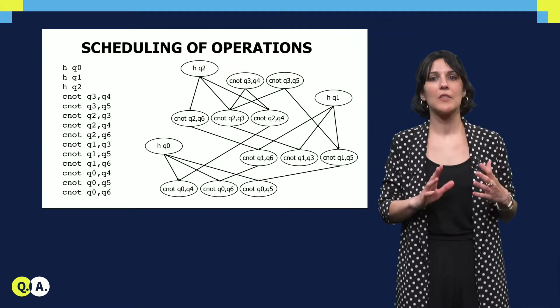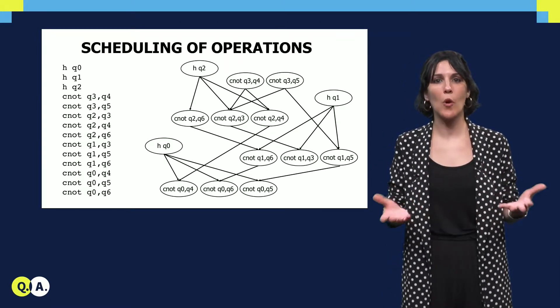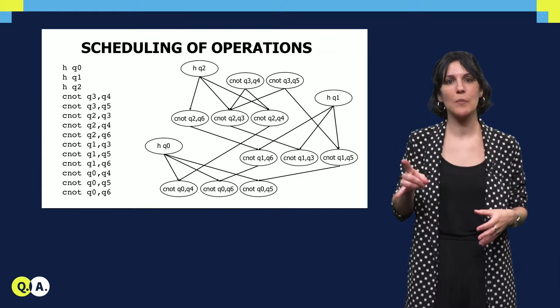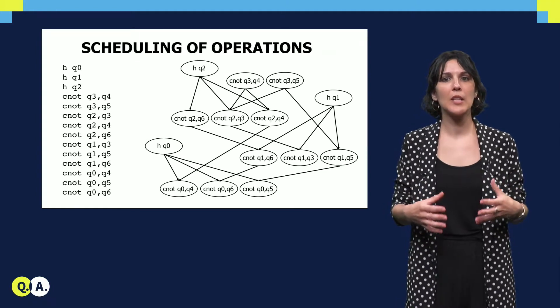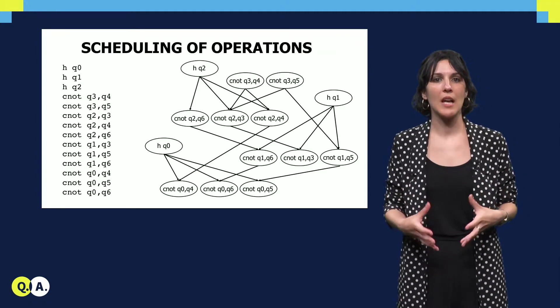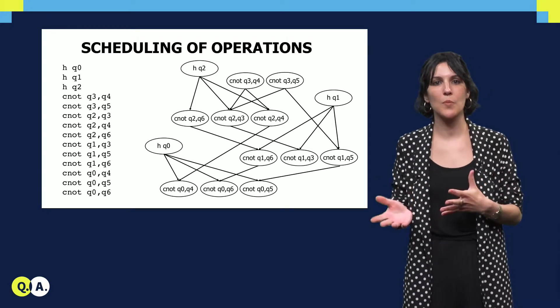In this graph, the nodes represent the instructions or operations and the edges represent the dependencies between them. Based on this graph, different schedule techniques can be used, such as as-soon-as-possible or as-late-as-possible.